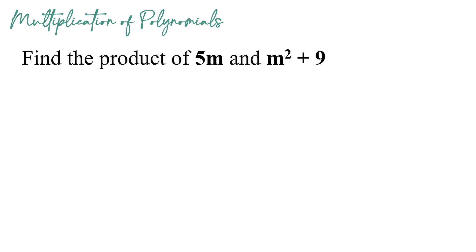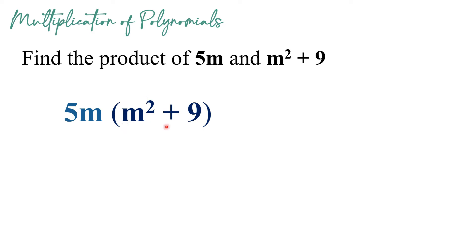Another example. Let us find the product of 5m and m squared plus 9. We write 5m outside and m squared plus 9 inside the parentheses. To multiply this monomial to a binomial, we distribute 5m to each term inside the parentheses. Starting with 5m times m squared — since m has no visible exponent, it is automatically 1. So we are adding 1 plus 2, giving us 5m raised to 3, or m cubed.